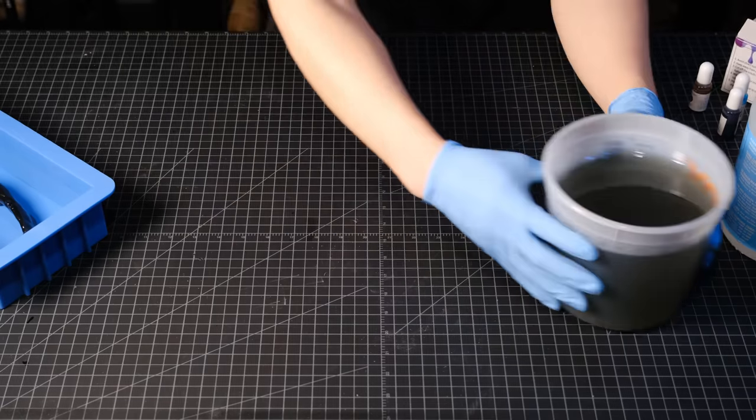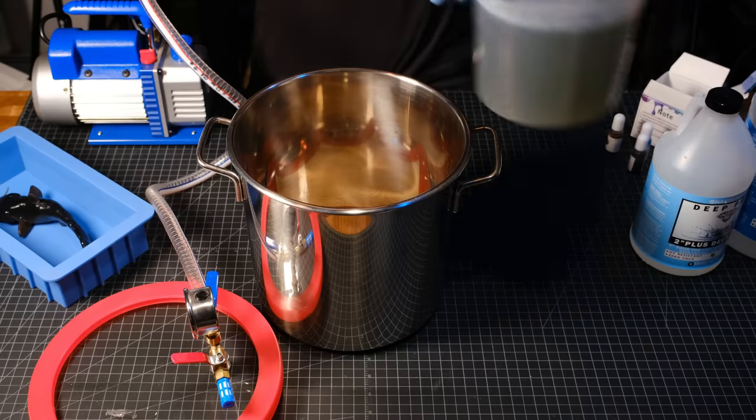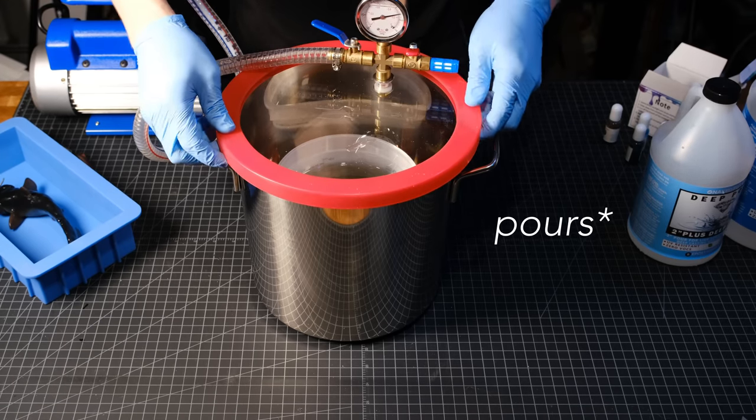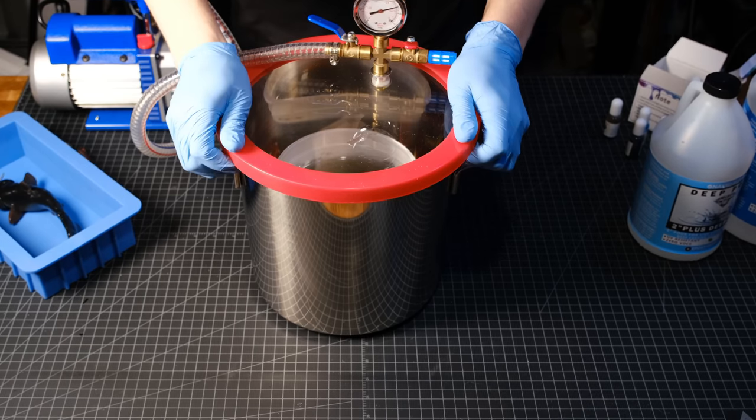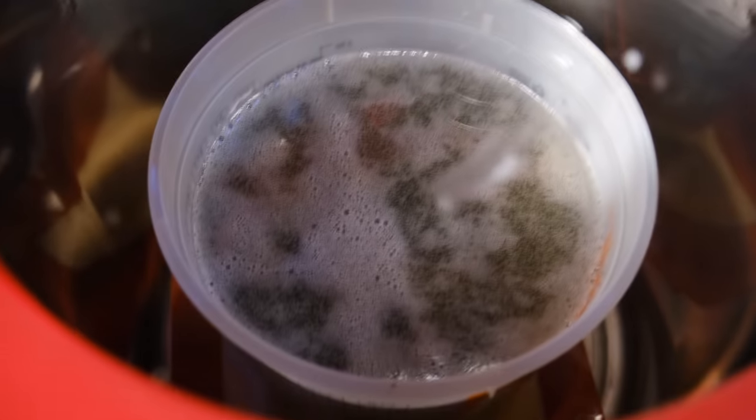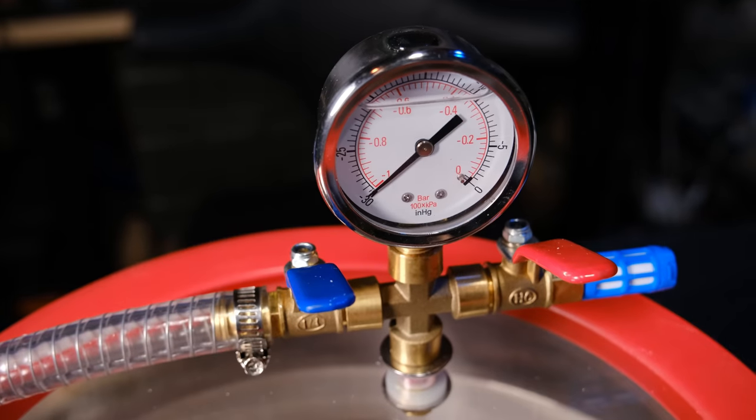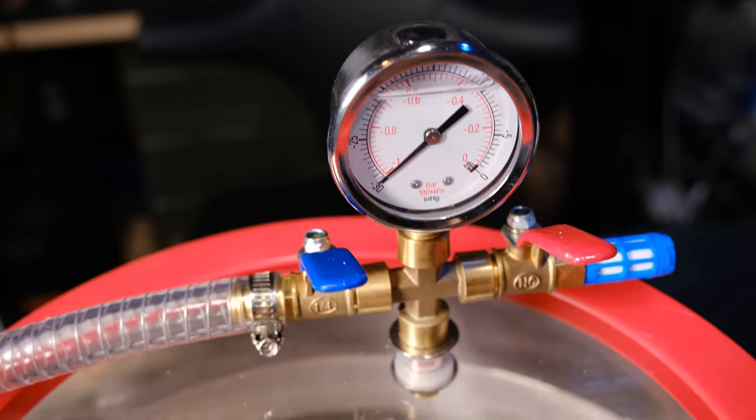Something I've been told to try and haven't until now is use a vacuum chamber to degas the resin. I've always had trouble with bubbles in my pours, but this gets rid of most of them. The chamber is set at negative one bar of pressure, which essentially causes the resin to boil, and all the bubbles rise to the surface. Most of them will pop by themselves, but all of the remainder can easily be popped with a torch.